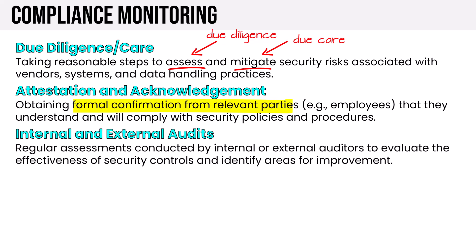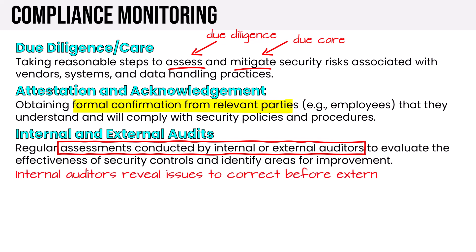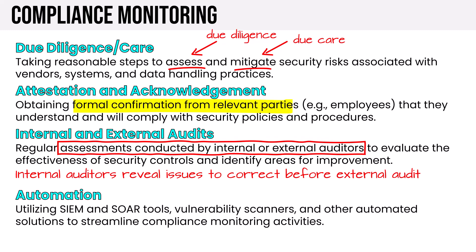Internal and external audits are regular assessments conducted by internal or external auditors to evaluate the effectiveness of security controls and identify areas for improvement. If done right, internal auditors reveal issues to correct before being subjected to an external audit. A very common practice is for an organization to self-audit a few weeks to a few months before an annual external audit, so they can self-identify and correct issues before the external auditor shows up. We can also use automation — SIEM and SOAR tools. SOAR is really the automation arm of a SIEM solution, along with vulnerability scanners or other automation solutions, to streamline compliance monitoring activities.